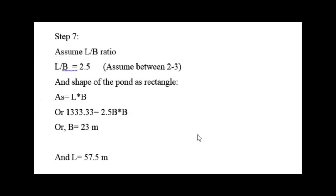In Step 7, we assume the pond is rectangular with a length-to-breadth ratio of 2.5 (within the acceptable range of 2 to 3). Using surface area = L × B = 2.5B × B = 1333.33 m², we get breadth B = 23 m and length L = 2.5 × 23 = 57.5 m.